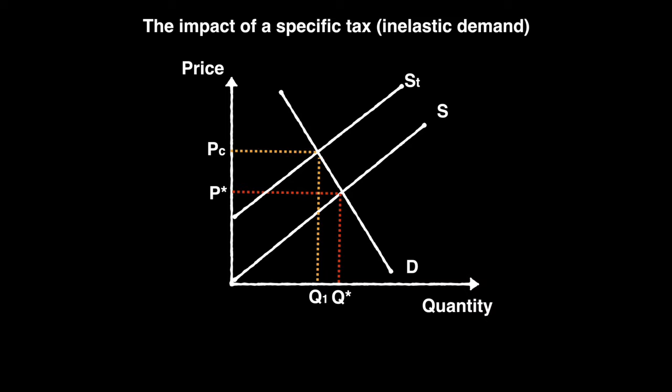A product with inelastic demand would see its price rise sharply but with little corresponding reduction in quantity. This is why taxes are argued to be ineffective at reducing smoking — cigarettes are addictive and rising prices are unlikely to deter smokers. The tax can be a great source of revenue for the government. If the demand curve were perfectly inelastic, the price of the good would rise by the full value of the tax but there would be no change in equilibrium quantity.